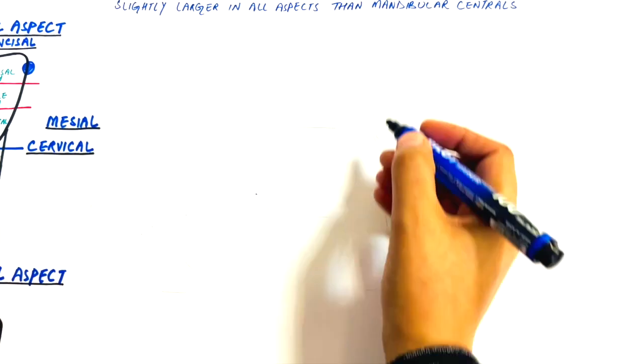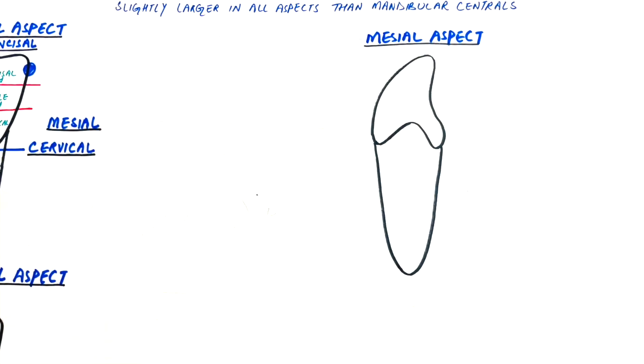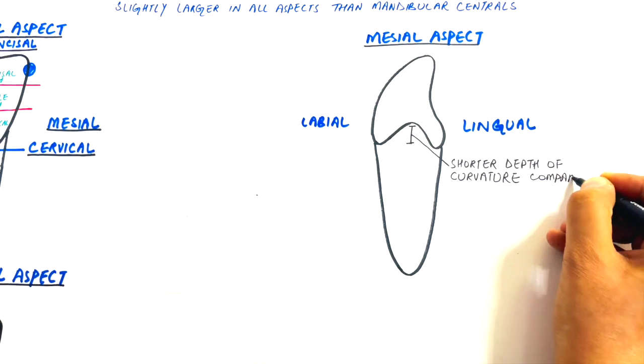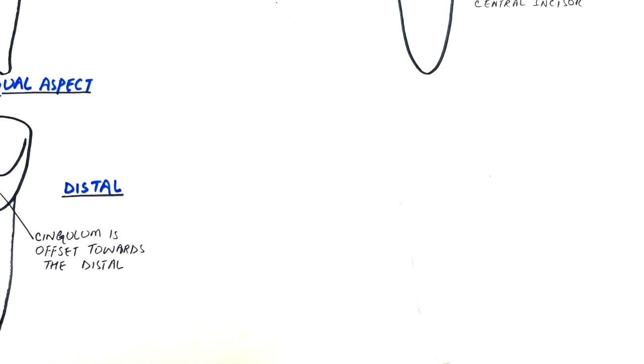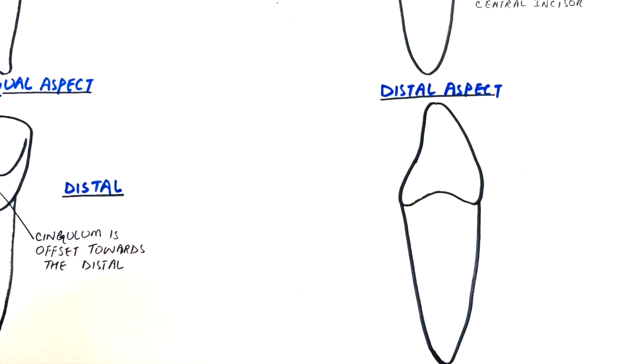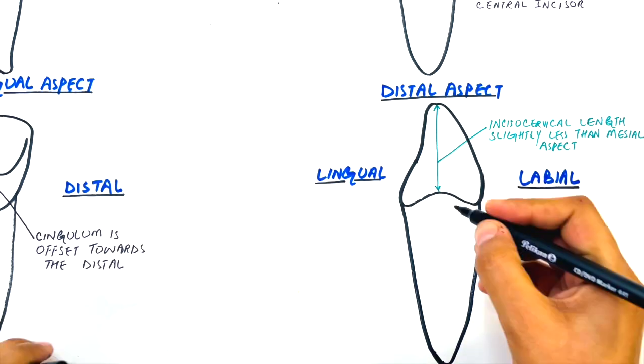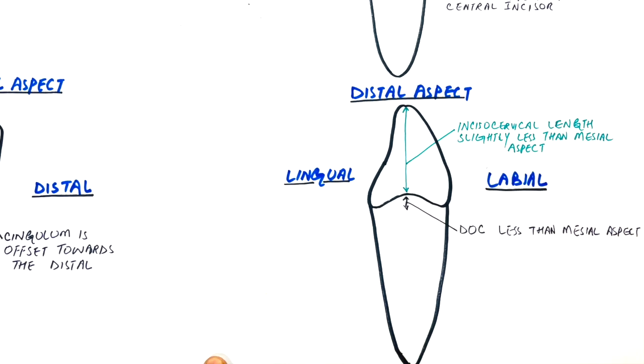From the mesial aspect, the outlines are same as the central incisor except for the short depth of curvature on the cervical outline. From the distal aspect, the incisal-cervical length of the tooth is slightly less than the mesial aspect of the tooth. The depth of curvature is slightly less than the depth of curvature on the mesial aspect.